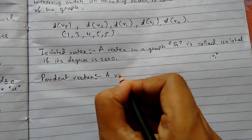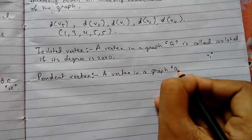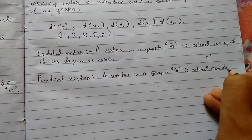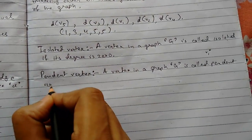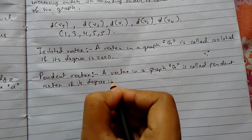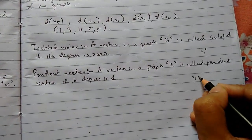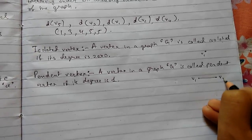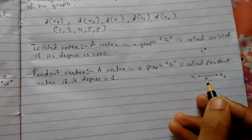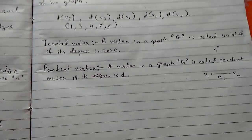Pendant vertex: a vertex in a graph G is called a pendant vertex if its degree is one. Suppose we have a vertex V1 and another vertex V2, with only one edge connecting to it or incident to it, so its degree is one. So V1 and V2 are both known as pendant vertices.